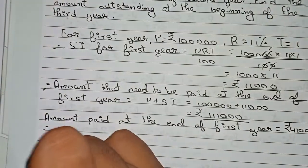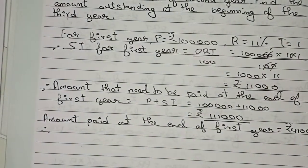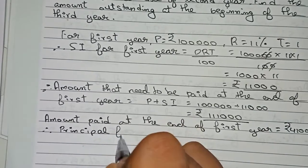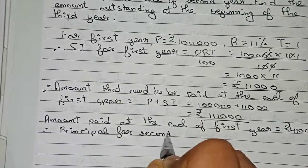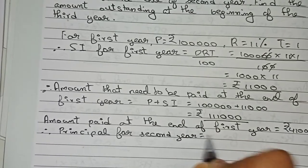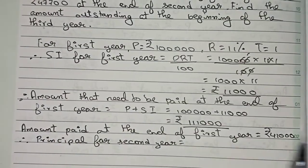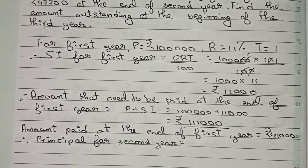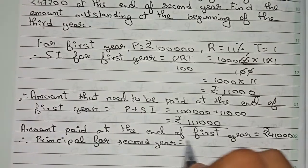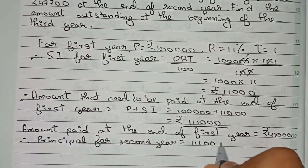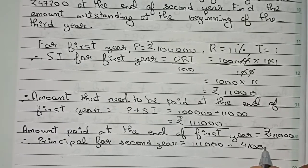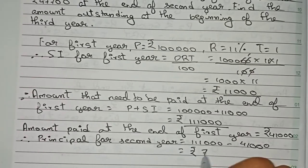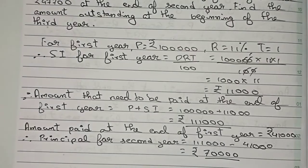Now we find the principal for the second year. The principal for the second year will be the amount that needed to be paid at the end of the first year, that is 1,11,000, minus the amount that was paid at the end of the first year, that is 41,000. This equals rupees 70,000. Therefore, this is the principal for the second year.